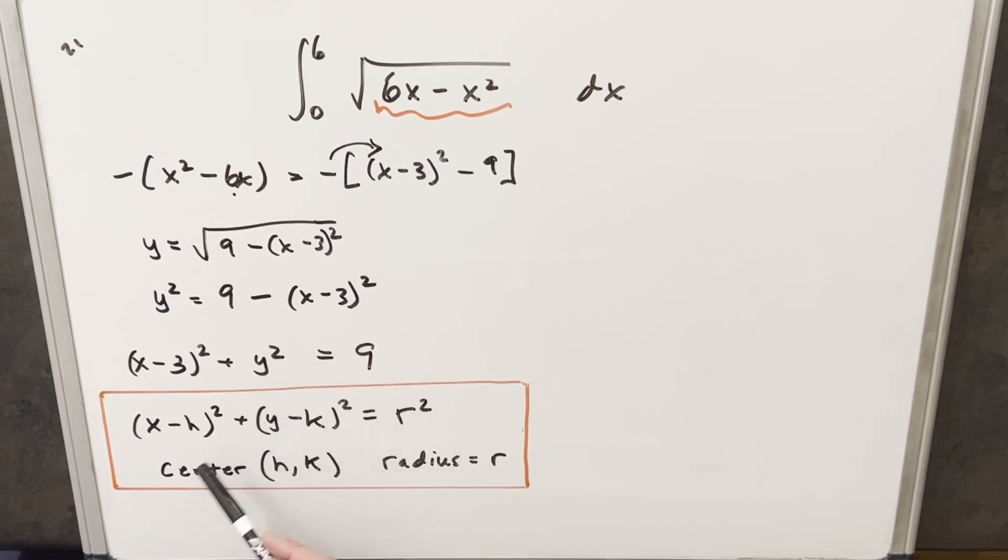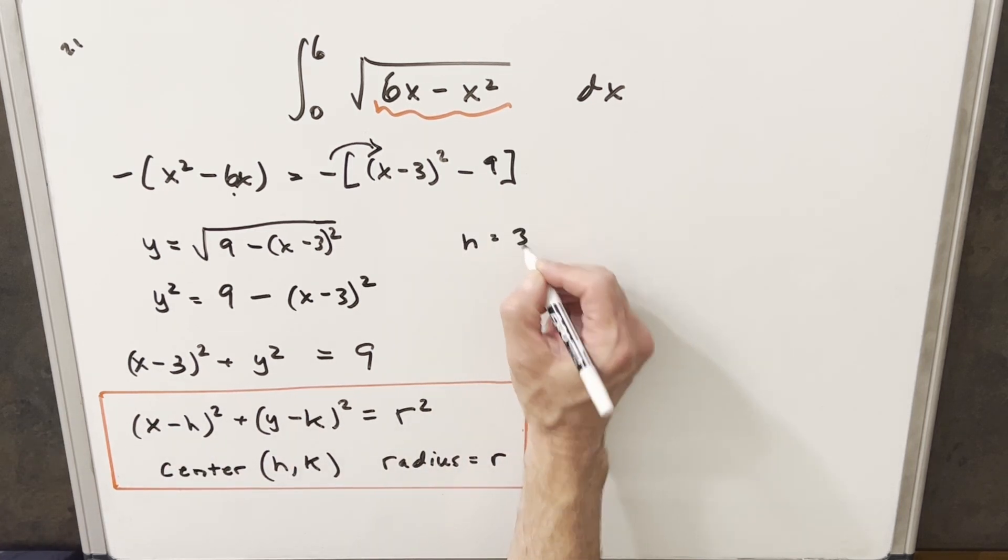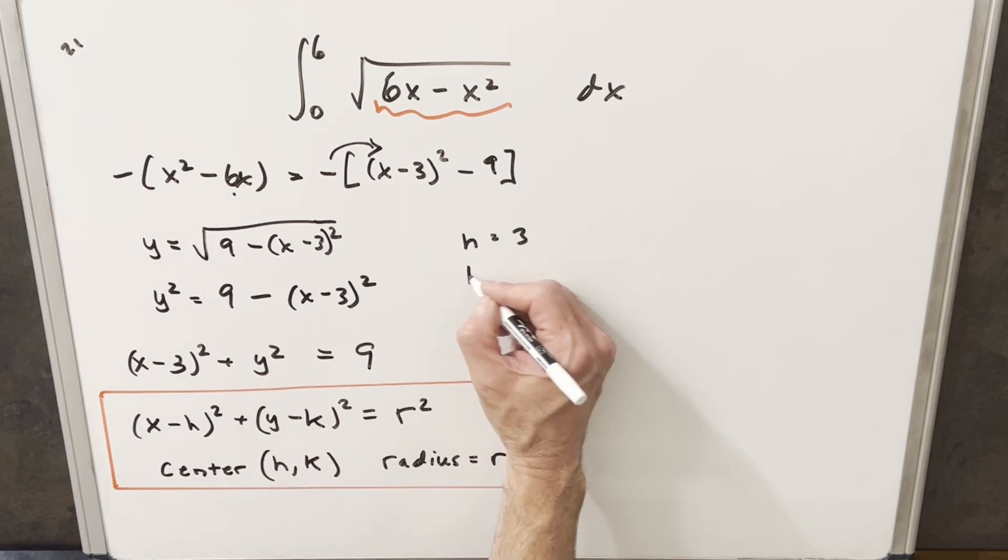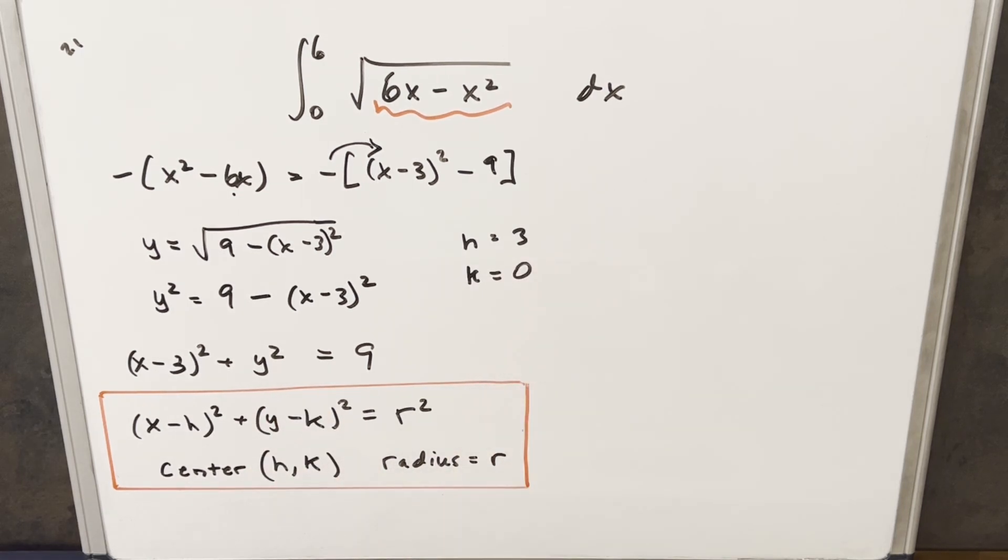So comparing our equation to the equation of the circle, on the x here, we have this point h, which is going to be 3. Now for our k value, we just have y squared here, so our k point is going to be 0. And then we can write 9 as 3 squared.